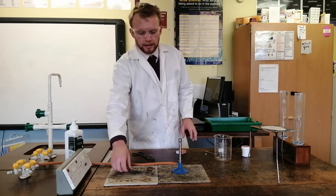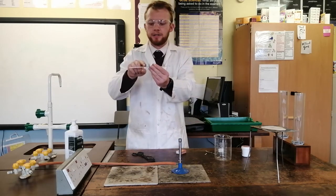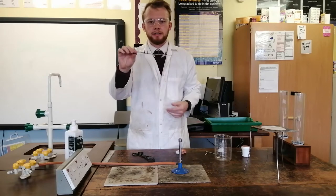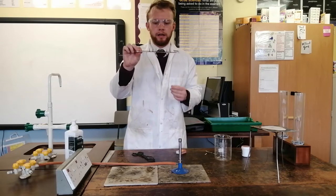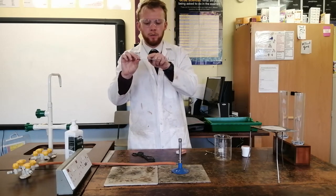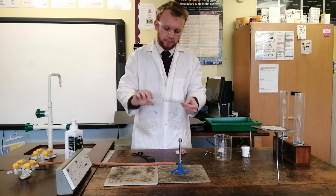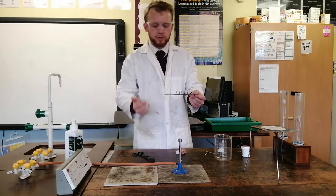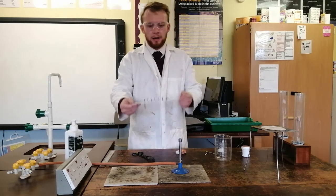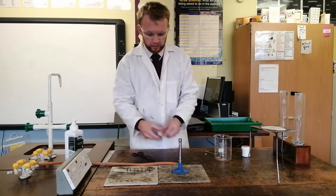I've got an aluminium strip and attached to this strip at different distances are nails, and they're attached on with some wax. I'm going to put one end of the aluminium strip under the Bunsen burner flame and we're going to see what's going to happen to the nails.